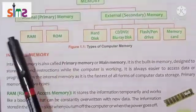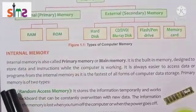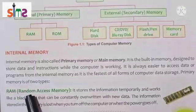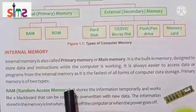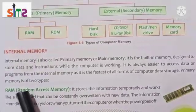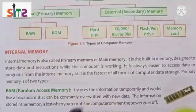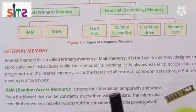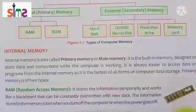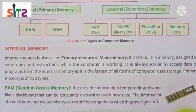Primary memory is of two types: first is RAM and second is ROM. RAM stands for Random Access Memory. It stores information temporarily — the information is not permanent, it is temporary.